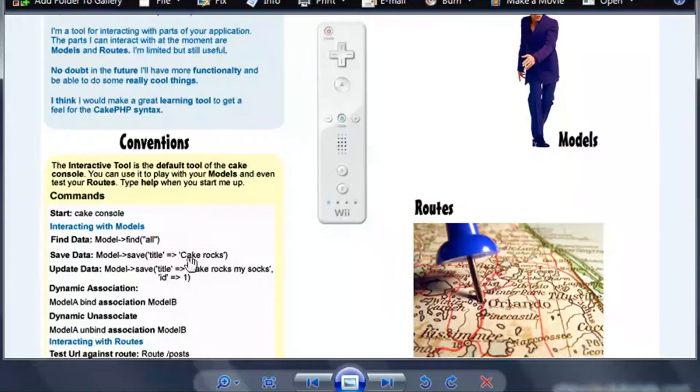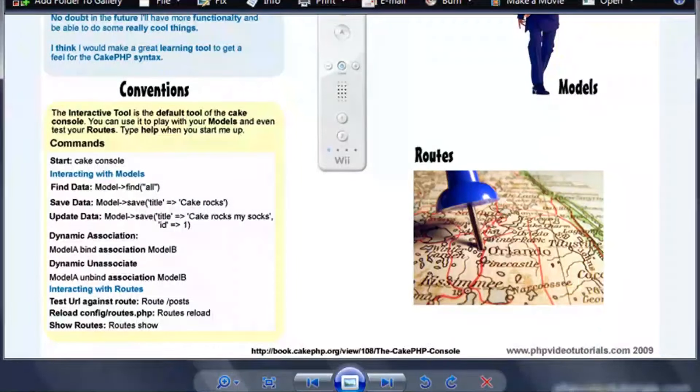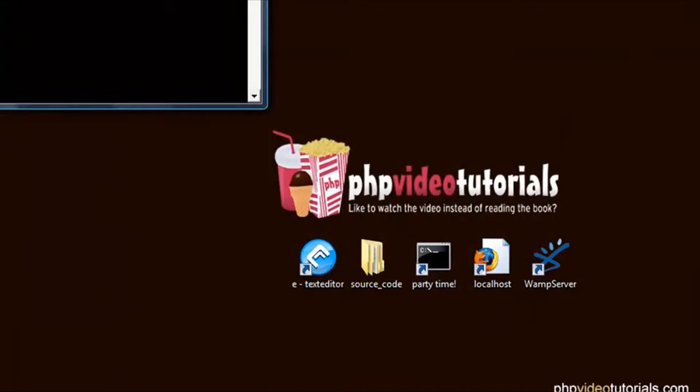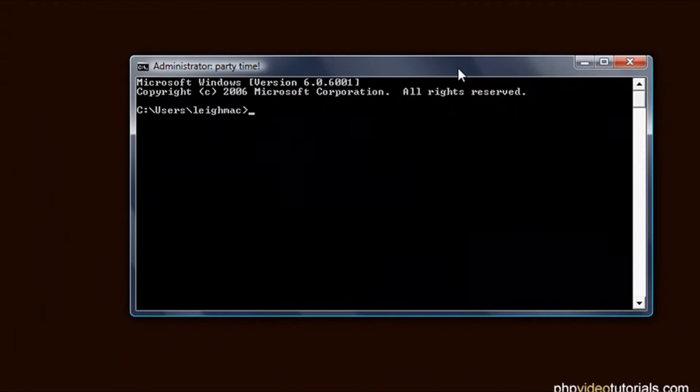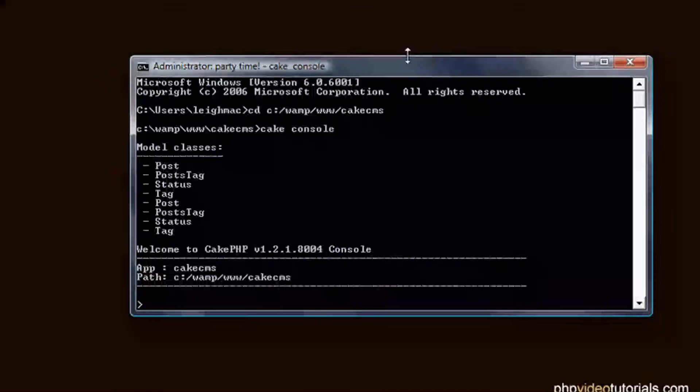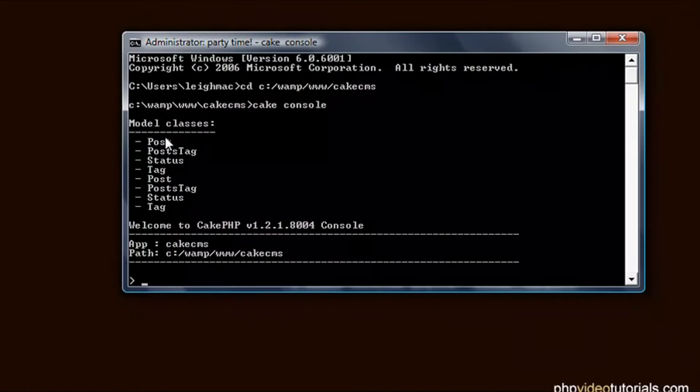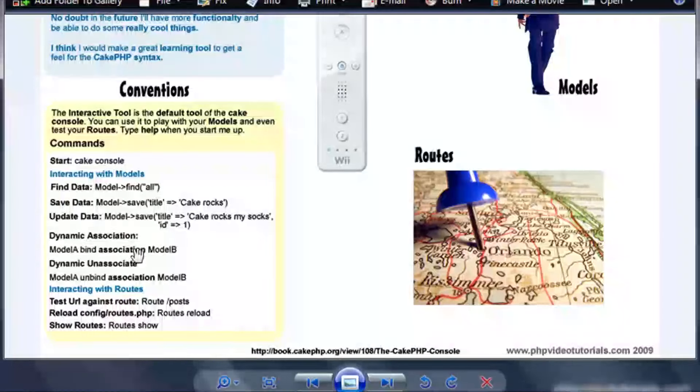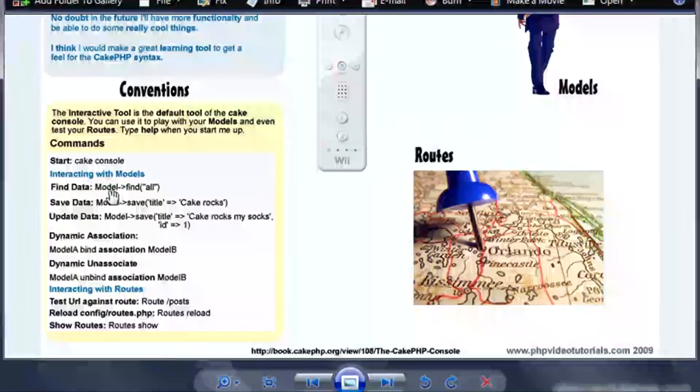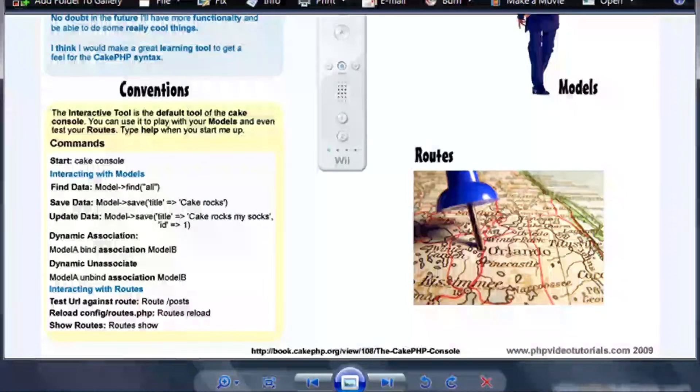So some of the conventions down here, we want to do some of the commands. So we want to start that up. So to do that, we've got to run the cake console. And it's the default tool. So let's open up the command line here and let's cd into our project. So c wamp www cake CMS. And let's run that. So cake console, enter. And you can see that when we start it up, we get a list of all our models. So we can interact with these models. We go back to our study guide. You can see that if we wanted to do a find on our models, we can say the model name and the find method of our model.